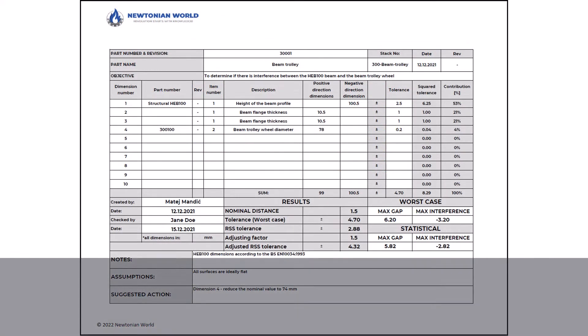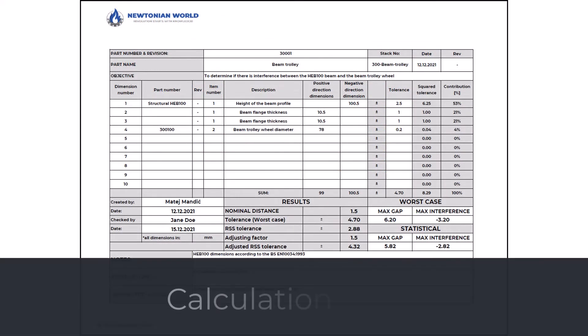The calculation sheet is defined as the document providing the results of calculations regarding essential product characteristics. This can include hand calculations, calculations according to the standard, FEA, CFD, etc.